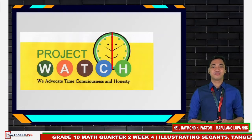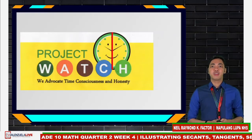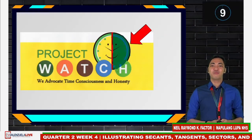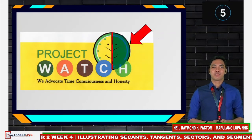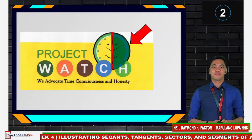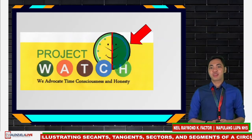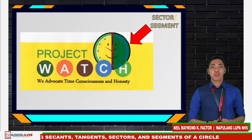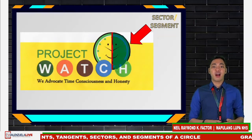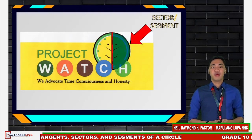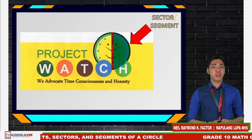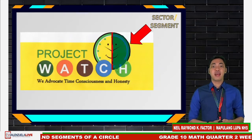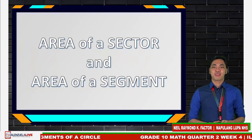Now, how about if we use the second hand — the red one? I'll extend it. What part of the circle did we form? That can be a segment or a sector. Take note that the boundaries are a diameter and an arc. The diameter is formed by two radii, so it can be a sector. Also, the diameter is your longest chord, so it can be a segment.